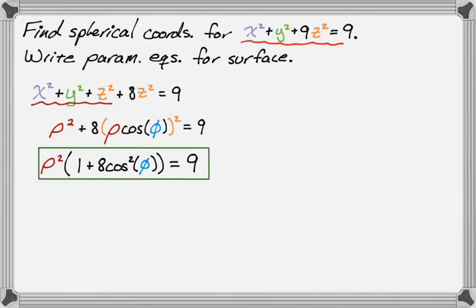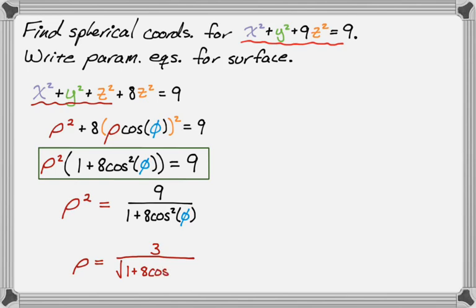But I want to write parametric equations, so I'm not done. I'm going to keep going and solve for ρ. I divide to get ρ² = 9/(1 + 8cos²(φ)). I need ρ, so I take the square root. There's a ± when you take the square root, but you don't lose anything if you just use the positive square root.